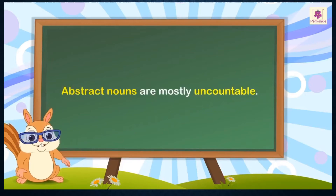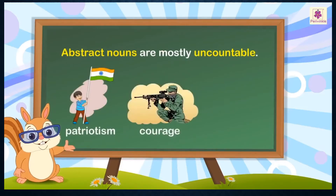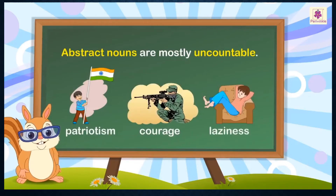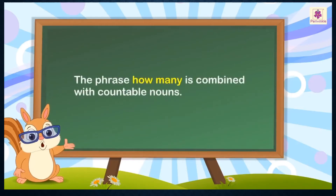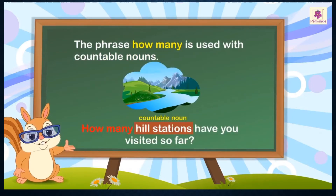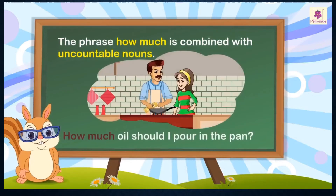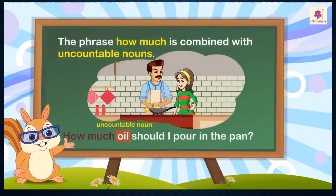For example: patriotism, courage, laziness. The phrase 'how many' is combined with countable nouns. For example: How many hill stations have you visited so far? The phrase 'how much' is combined with uncountable nouns. For example: How much oil should I pour in the pan?